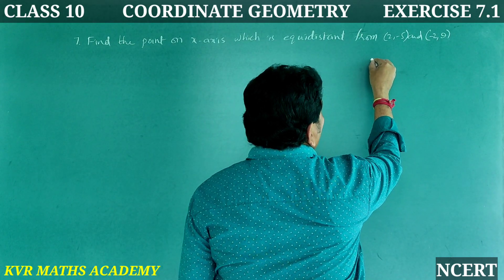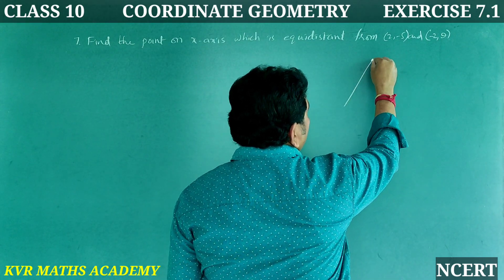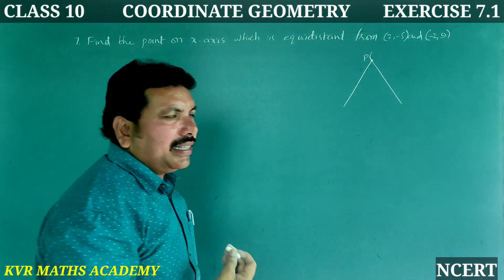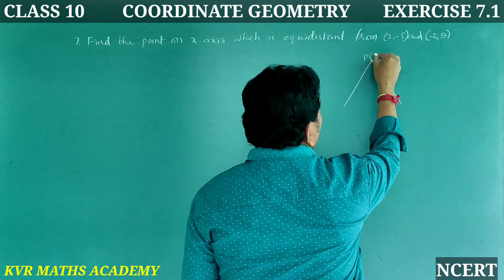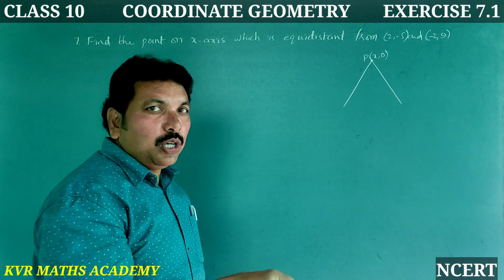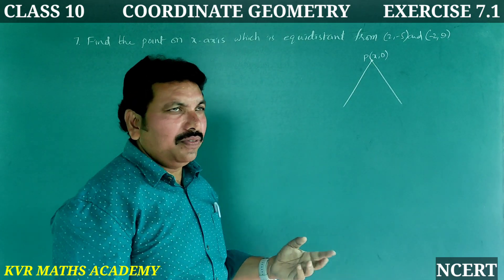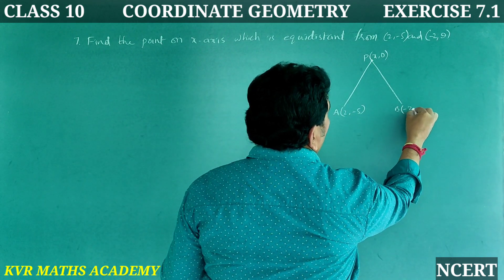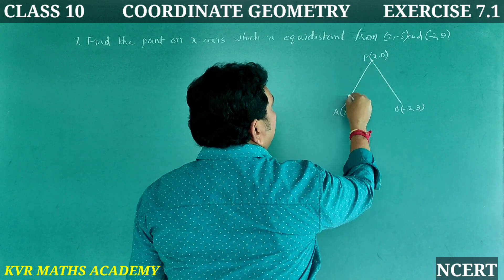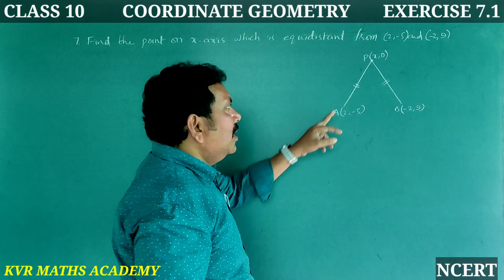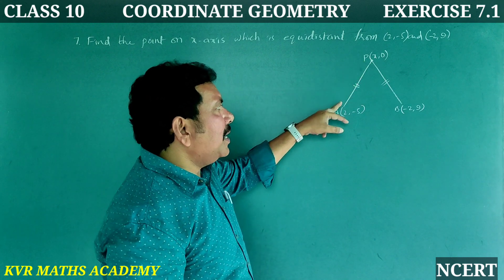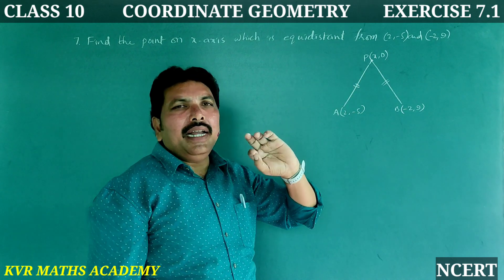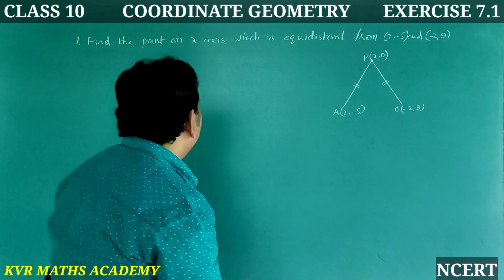Here, the x-axis point is at equal distance from two given points. Suppose P is a point on the x-axis, and it is equidistant from points A and B — that is, PA is equal to PB.